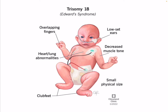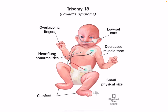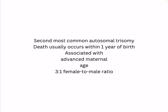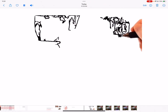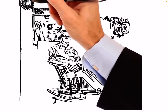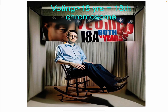In pictorial form, Edward Syndrome involves trisomy of chromosome 18, overlapping fingers, low-set ears, small physical size, and club feet. For a picture mnemonic, we use the celebrity Edward Snowden. Edward Snowden is imagined sitting in front of a voting booth — since voting is given above 18 years of age, this helps us remember that chromosome 18 is involved.